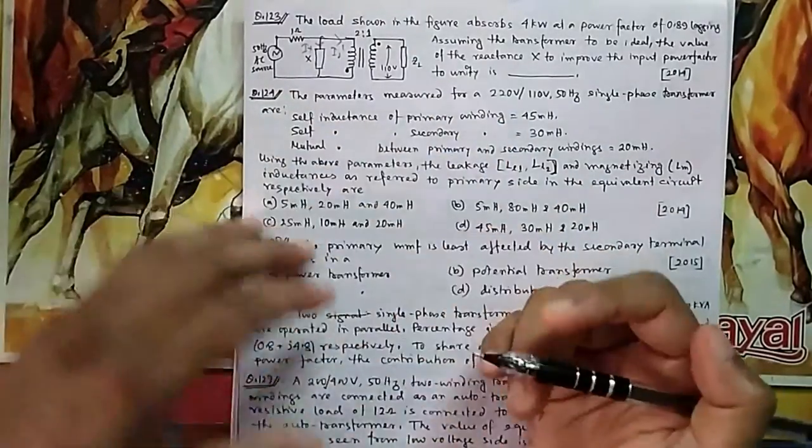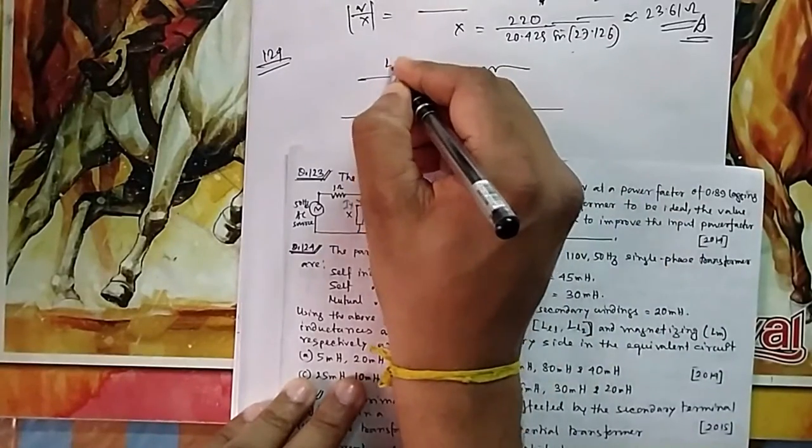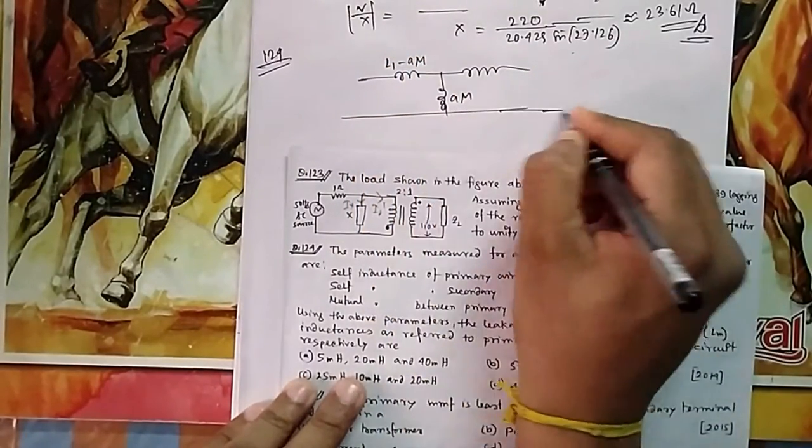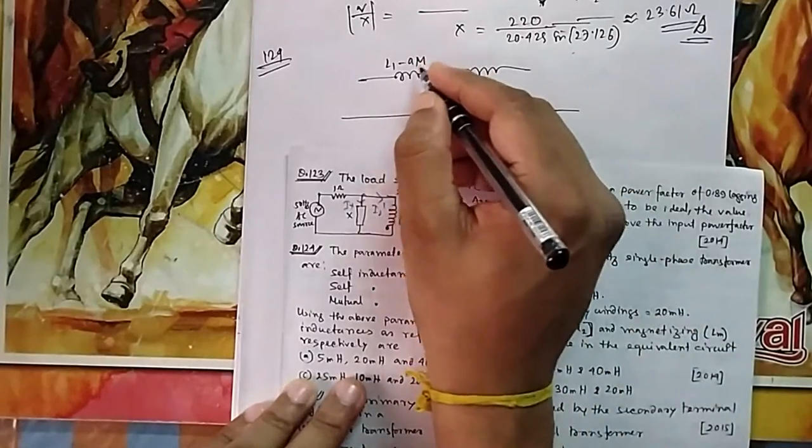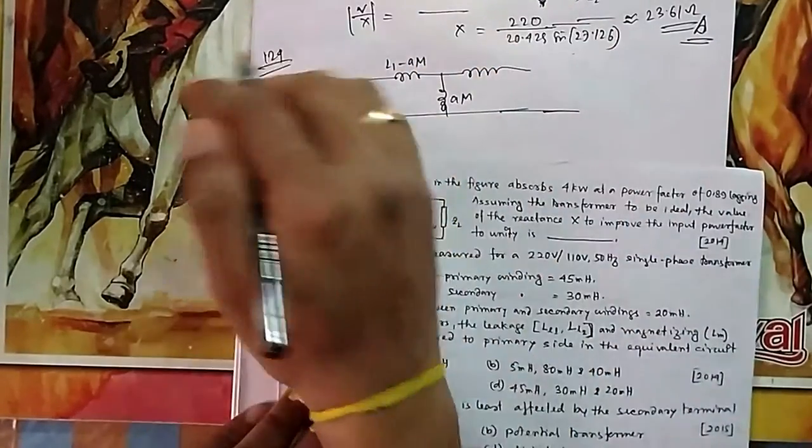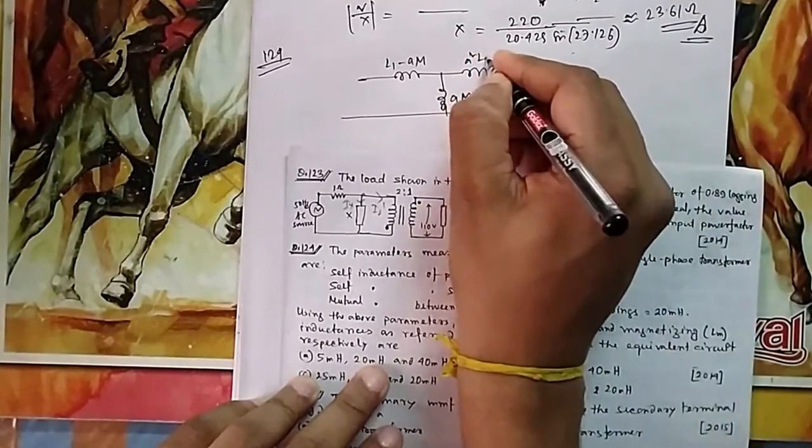Because this flux should oppose each other, so they should not be additive, that should be subtractive. So it should be your L1, this is L1, this is a times m, this is also a times m. Because this mutual inductance is negative here, so it is L1 minus am. And L2, if you convert it this side, just now you have seen as per this ratio will convert a square times L2, and then minus a times m.